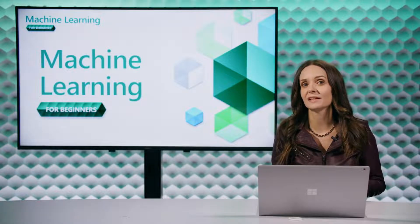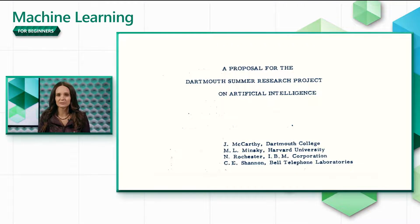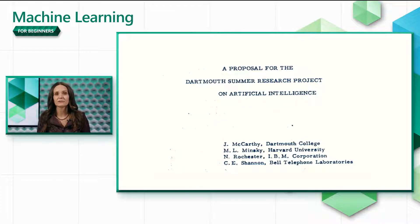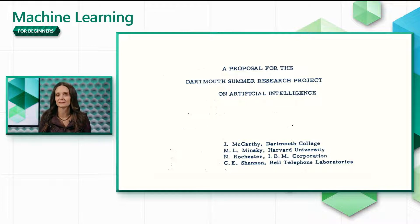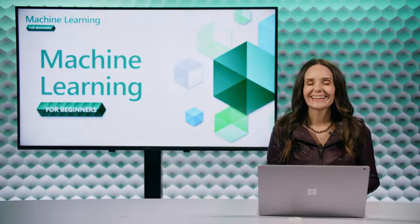In 1956, the term artificial intelligence was coined, with a small group of scientists gathered at Dartmouth College in the U.S. for an event called the Summer Research Project on Artificial Intelligence. This conference was the birth of the field of research we know as AI.